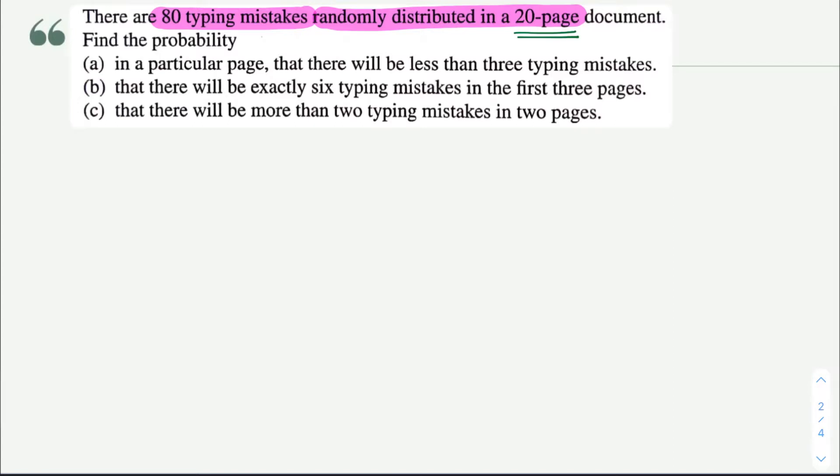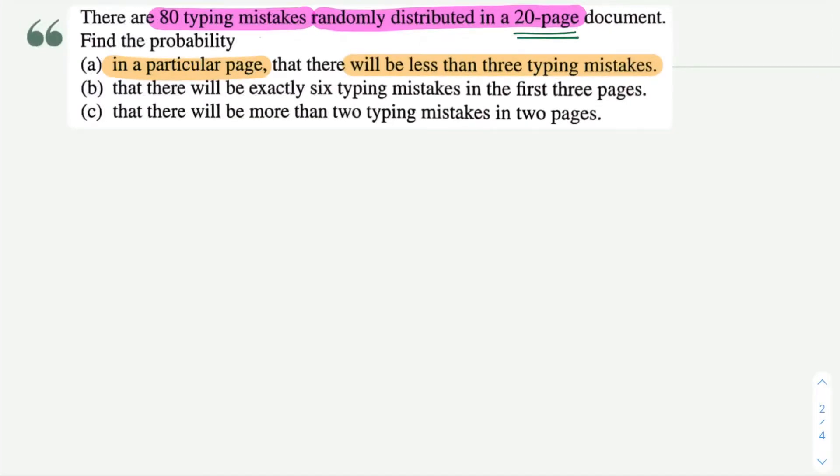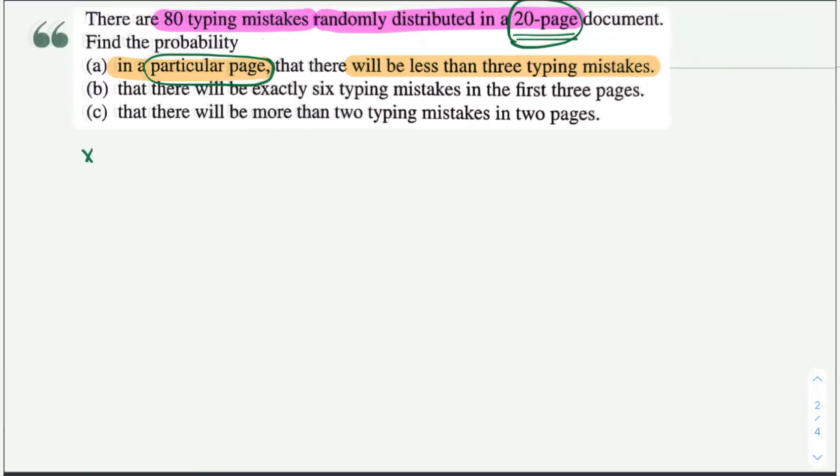Because binomial needs to have number of trial and probability of success. Okay, now let's look at part a. In a particular page, there will be less than three typing mistakes. Now because they're asking for a particular page, you will no more need a 20 page document.